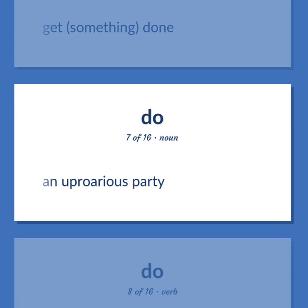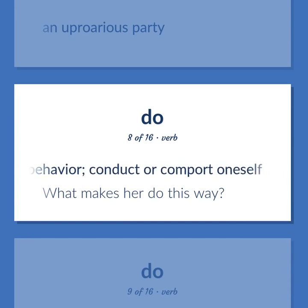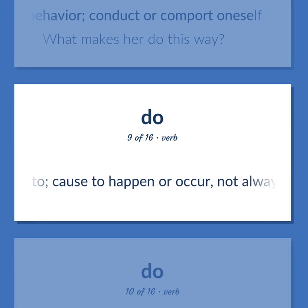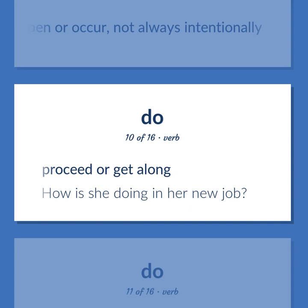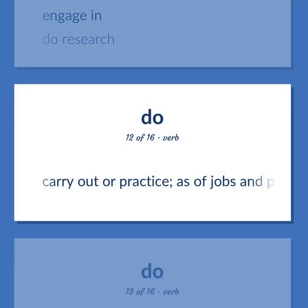Do: An uproarious party. Behave in a certain manner, show a certain behavior, conduct or comport oneself — 'What makes her do this way?' Give rise to, cause to happen or occur, not always intentionally. Proceed or get along — 'How is she doing in her new job?' Engage in — 'Do research.' Carry out or practice, as of jobs and professions.